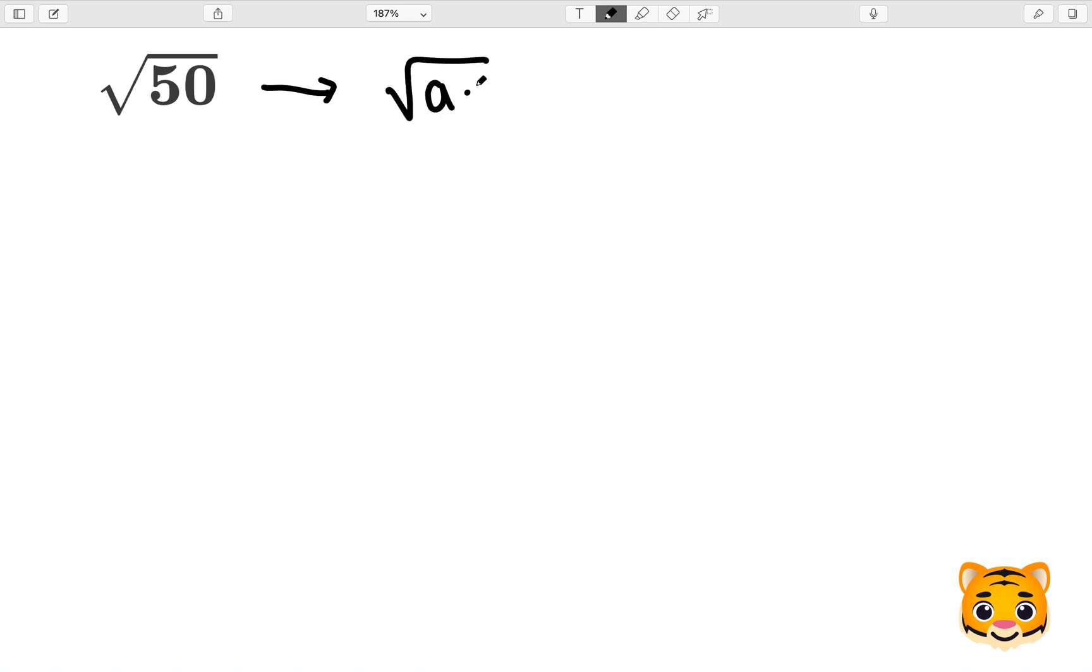To find the square root of a times b, where a and b are both just numbers, we can separate those out into the square root of a times the square root of b. So we would have two separate square roots multiplied by each other.